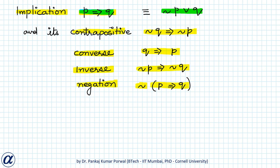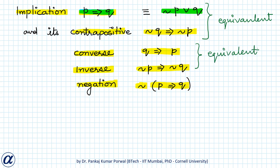The negation of p implies q is the negation of the whole implication. Before proving the relationship between the implication and all the statements derived from it, note that the implication and the contrapositive are equivalent — their truth tables are identical. Similarly, the converse and inverse of an implication are equivalent.